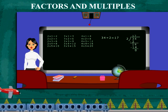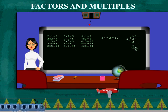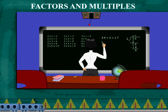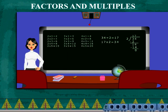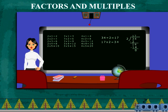34 divided by 2 is 17. And 17 into 2 is equal to 34.